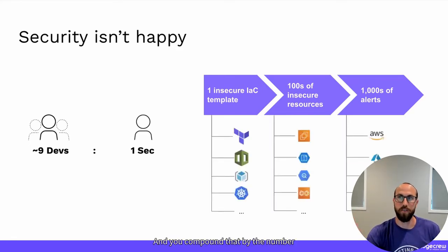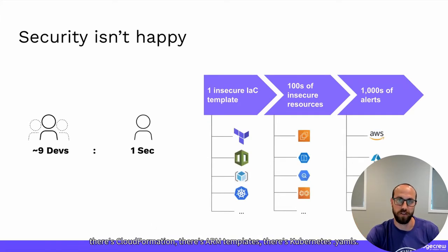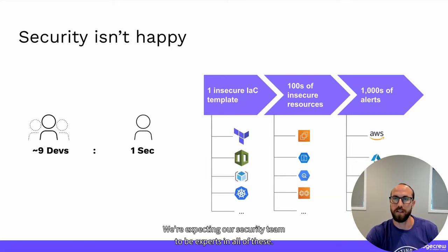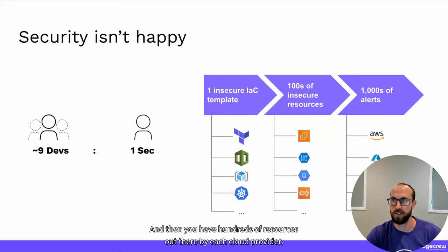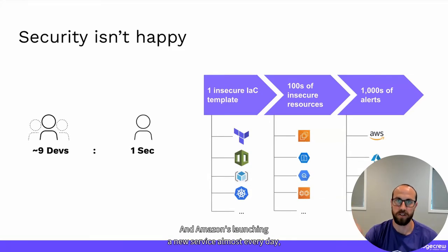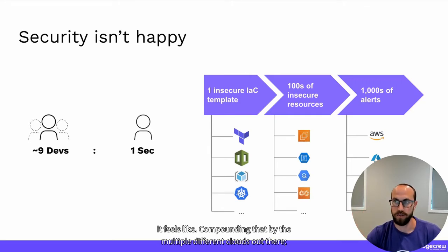You compound that by the number of different infrastructure as code templates out there — Terraform, CloudFormation, ARM templates, Kubernetes YAMLs. We're expecting our security team to be experts in all of these, plus hundreds of resources from each cloud provider. Amazon's launching a new service almost every day, it feels like.